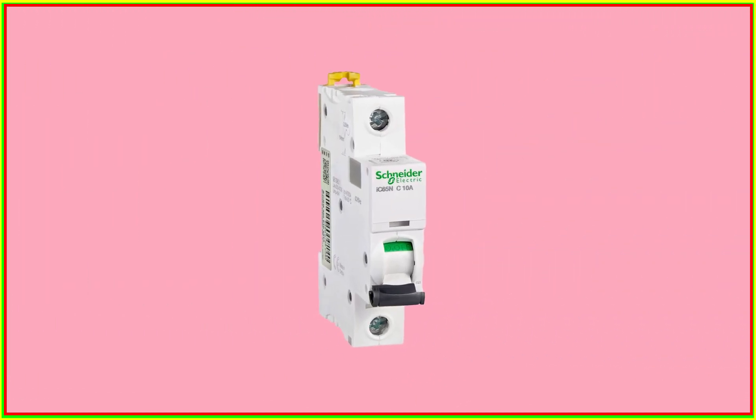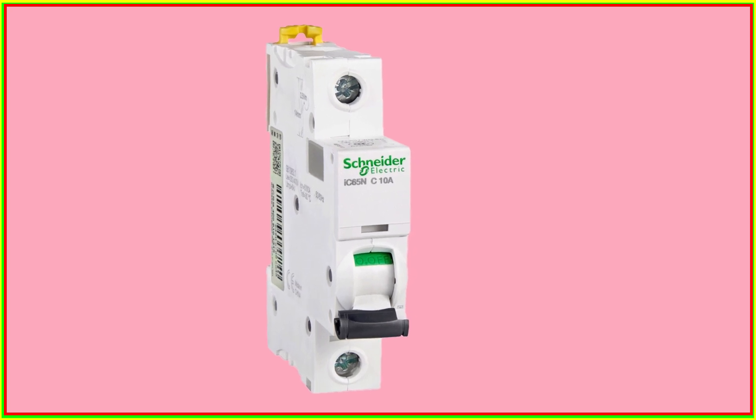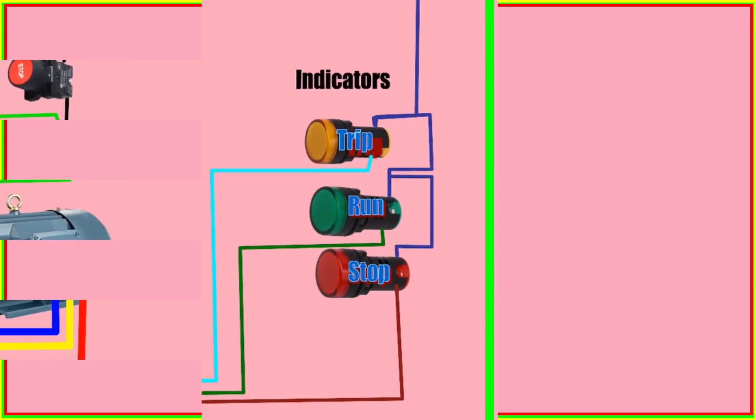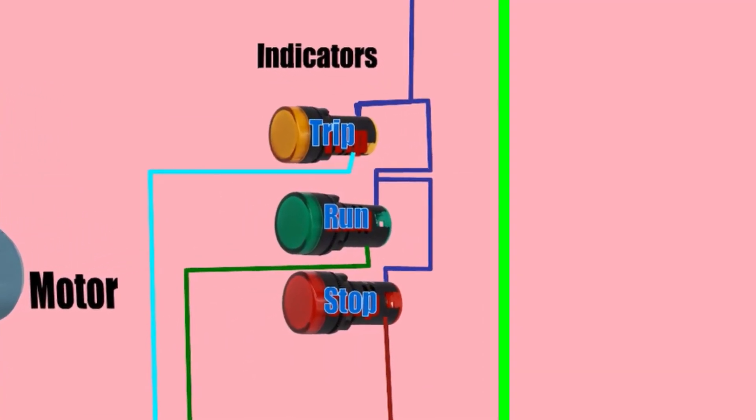Additionally, for control purposes, single-pole MCB, stop, run, and trip indicators are used.